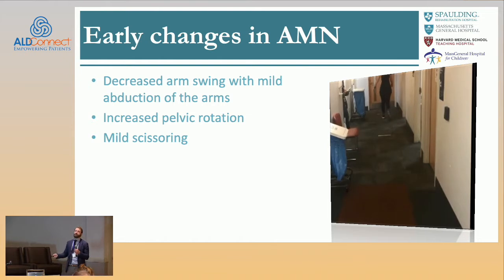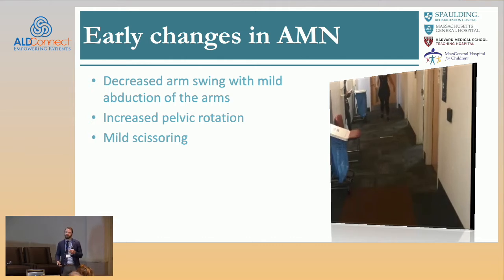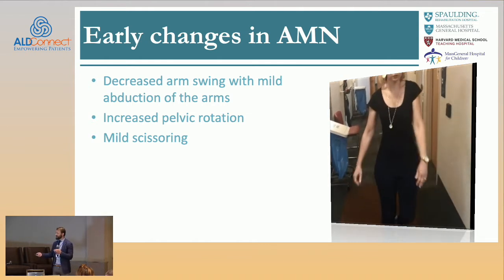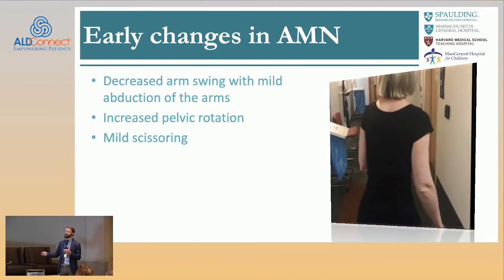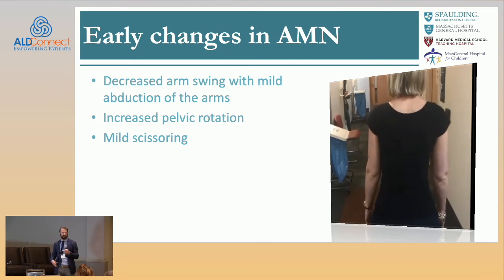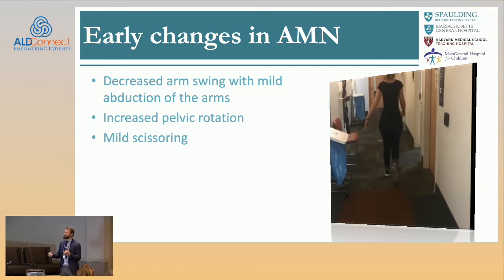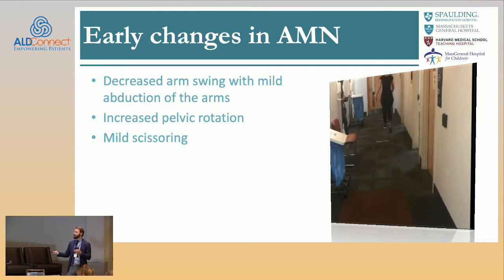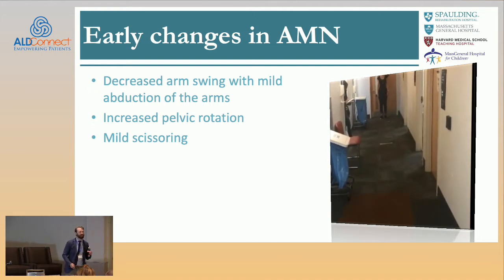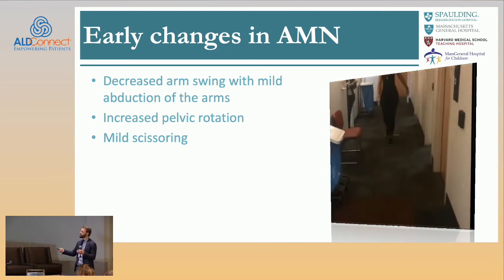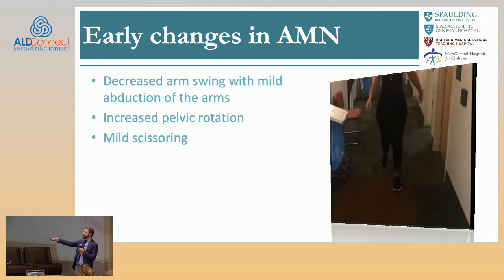There's also decreased strength and coordination in terms of advancing the limb. Typically we have a good push off from our calf muscles and pull forward with our hip musculature. You can see compensation happening early on with increased pelvic rotation — using the whole body to advance the leg, which is not energy efficient. We start having some decreased control over our muscles, seeing some scissoring during swing phase as the adductors activate, making the gait stance almost more narrow.